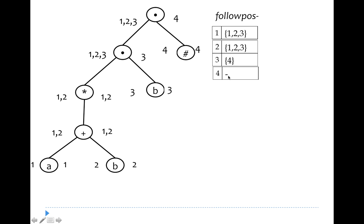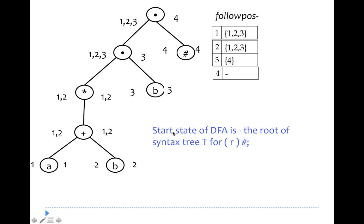We have now computed first position, last position, and follow positions for all nodes. Now we use follow position to construct the DFA. According to the DFA algorithm, the start state is the first position of the root node, which is {1, 2, 3}.